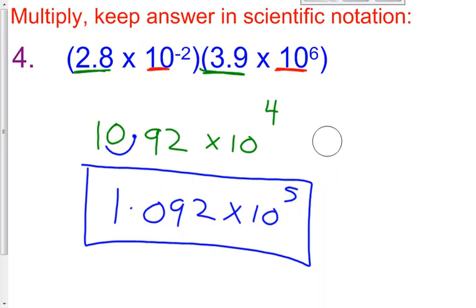Excel math might try to trick you by having one of the answer choices be the intermediate form. Don't be fooled — always know that in scientific notation, you must have one and only one non-zero digit to the left of the decimal point, and everything else must be to the right.